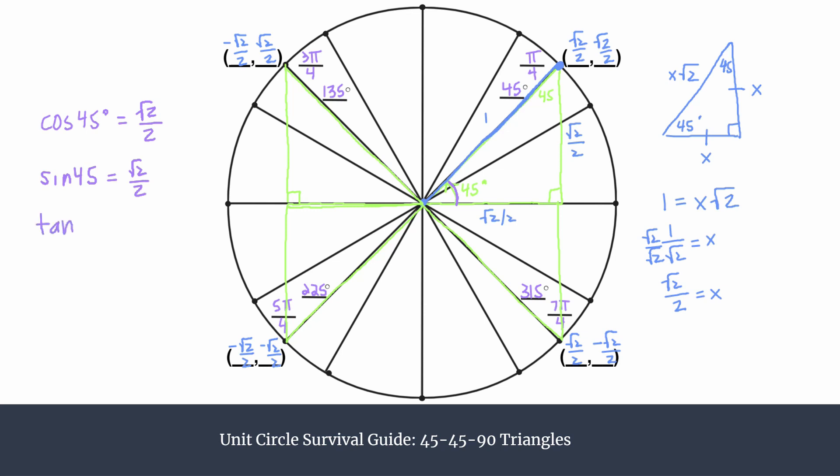And then finally, let's say we wanted to find the tangent. Note that it could be the tangent of pi over 4. That's the same thing as the tangent of 45 degrees. So we know the tangent ratio is opposite over adjacent. So that would be root 2 over 2 divided by root 2 over 2. So a number divided by itself is just 1. And so these are our exact values. They are simply ratios of sides of triangles.